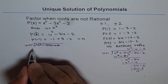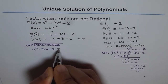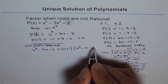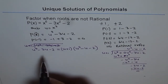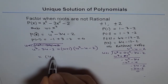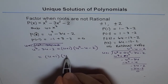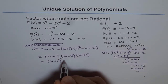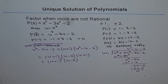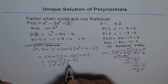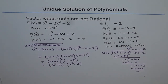So we can write u cubed minus 3u minus 2 as equal to (u + 1) times (u squared minus u minus 2). The quadratic factor u squared minus u minus 2 can itself be factored as (u minus 2)(u + 1). So the full factored form is (u + 1) squared times (u minus 2). Since u equals x squared, this becomes (x squared + 1) squared times (x squared minus 2).